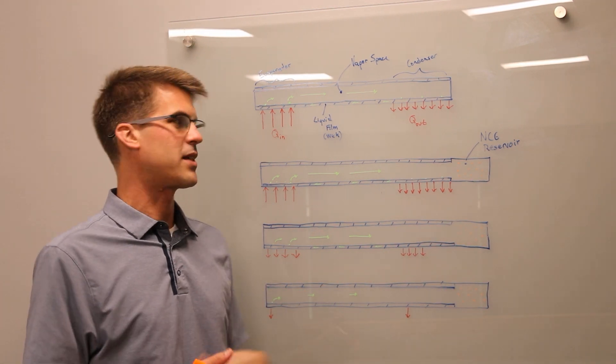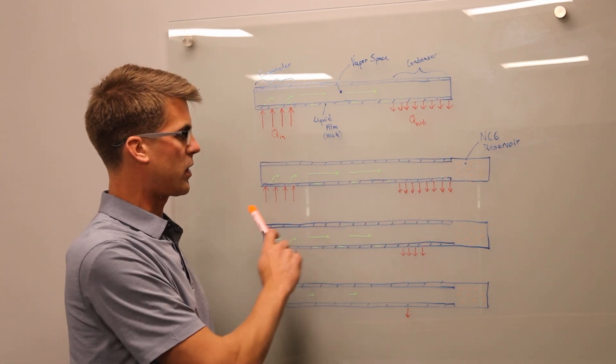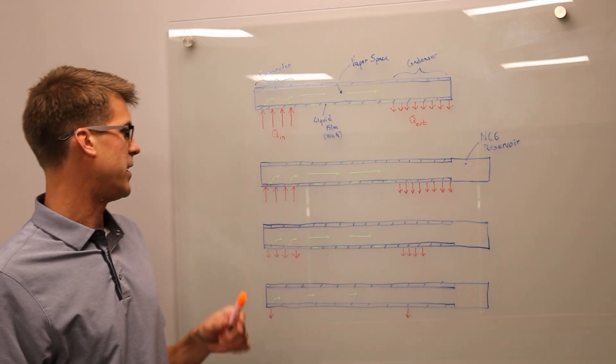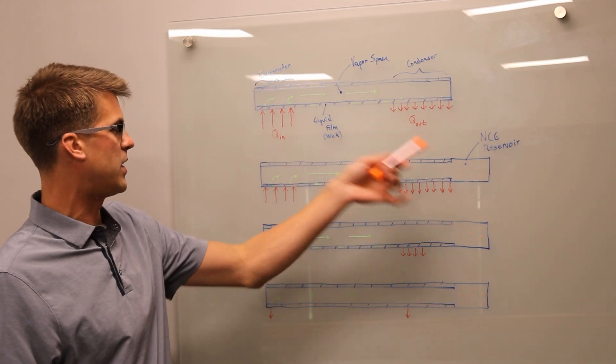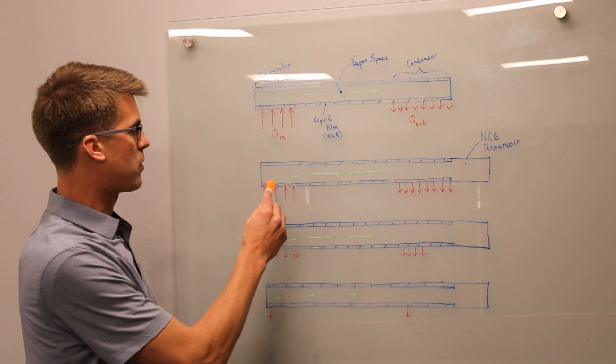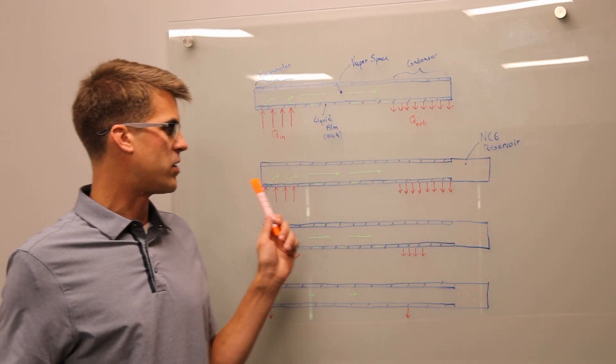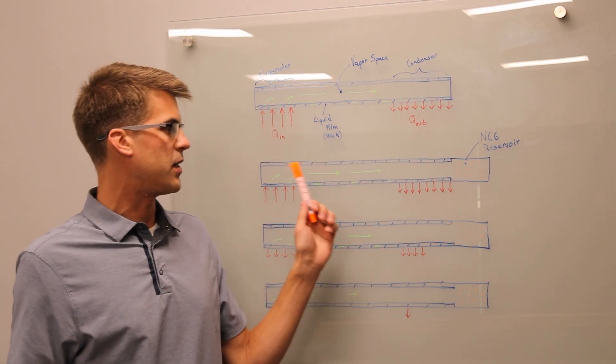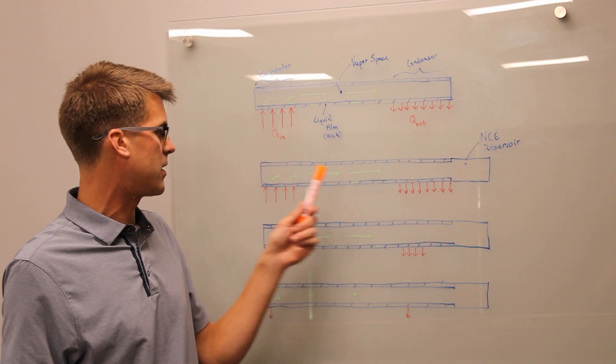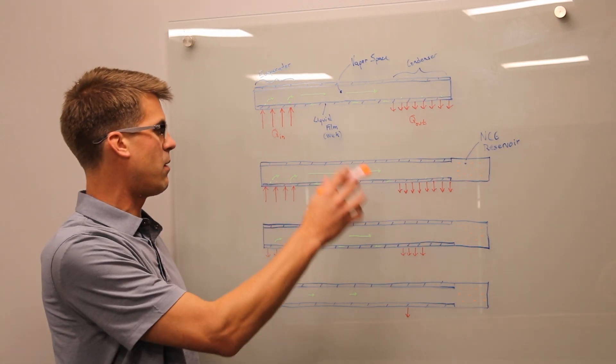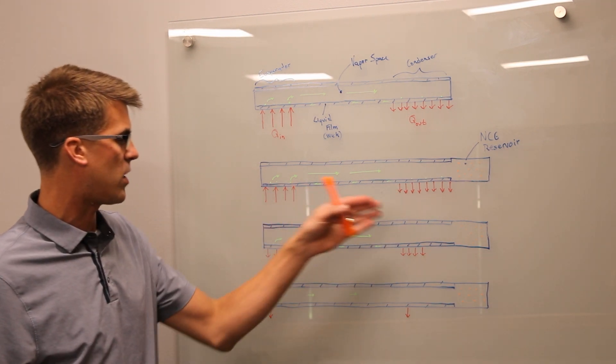This reservoir, as the name implies, contains a non-condensable gas which is introduced along with the working fluid into the pipe. Now you can see at nominal powers, this will work the same function as if we didn't have that reservoir there. The vapor pressure of the evaporated working fluid is strong enough at high power when designed properly to push all the NCG into the reservoir and this will act as a constant conductance heat pipe moving the same amount of heat as your nominal pipe with the same delta T across it.